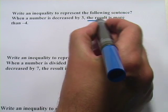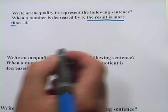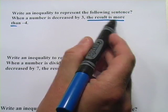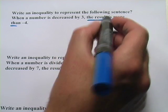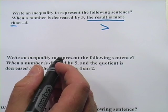So when you see the result is more than, that's a sign. That's going to be your inequality sign. And in this case, the result is more than, that's a greater than. So we've got a greater than sign there.